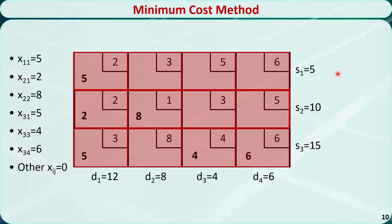Let's bring back the original supply and demand. The sum of the first row, 5, is equal to 5. The sum of the second row, 2 plus 8, is equal to 10. The sum of the third row, 5 plus 4 plus 6, is equal to 15. The sum of the first column, 5 plus 2 plus 5, is equal to 12. The sum of the second column, 8, is equal to 8. The sum of the third column, 4, is equal to 4. The sum of the last column, 6, is equal to 6. So all the constraints are satisfied — this is indeed a basic feasible solution.